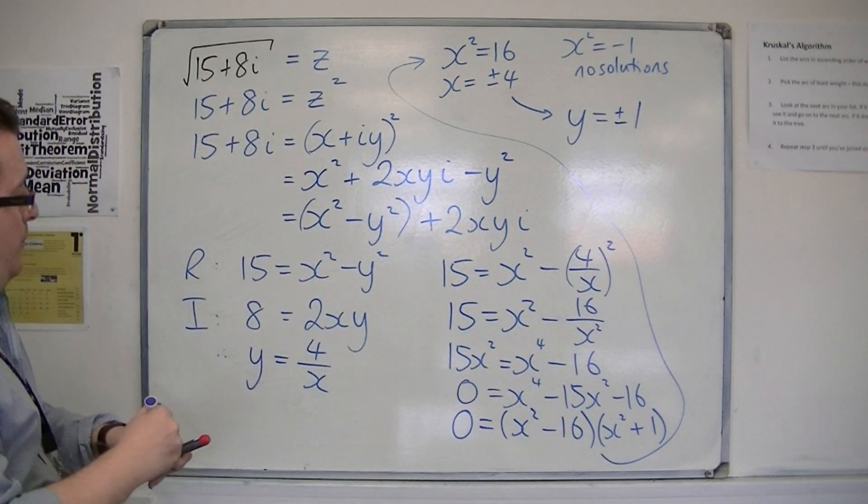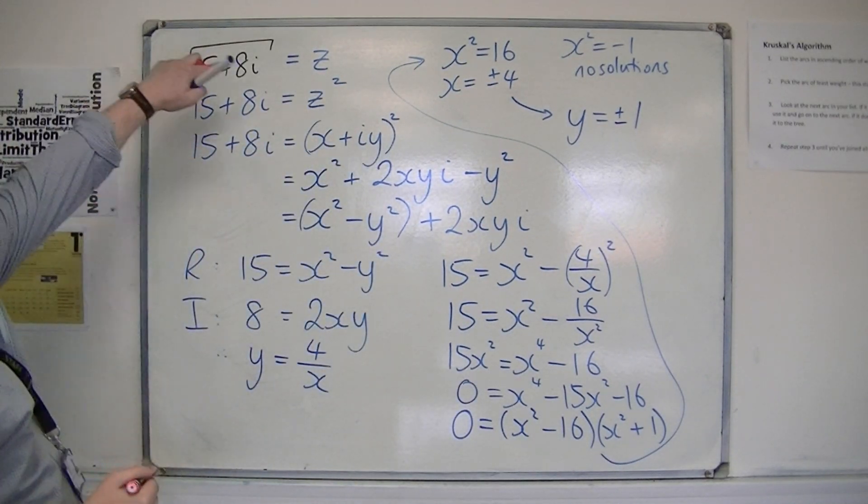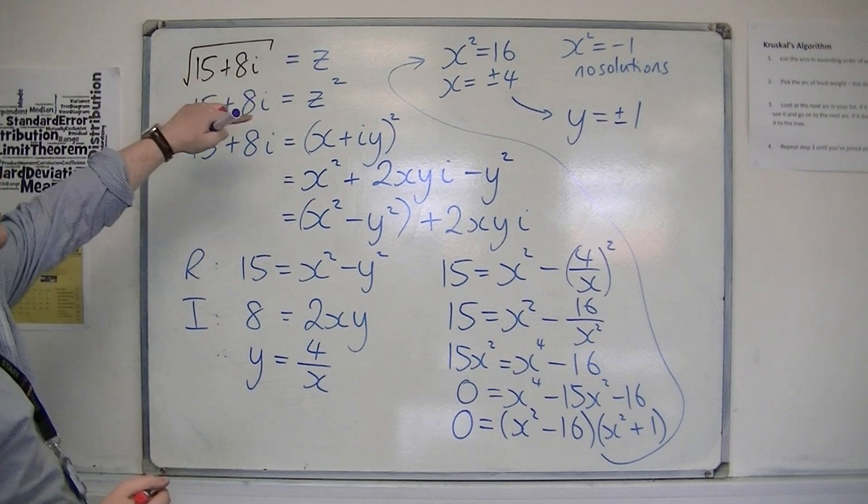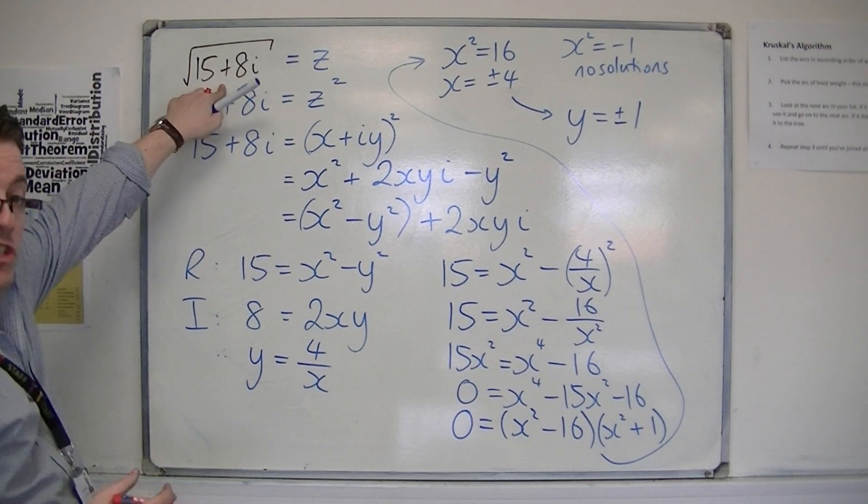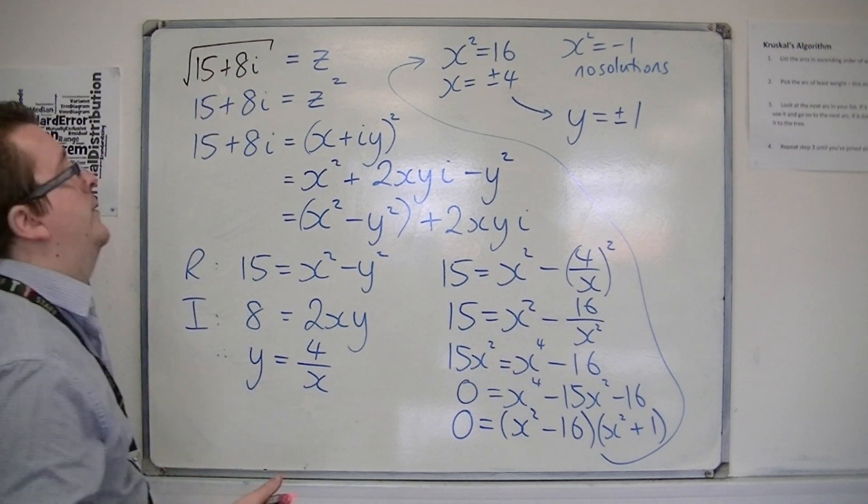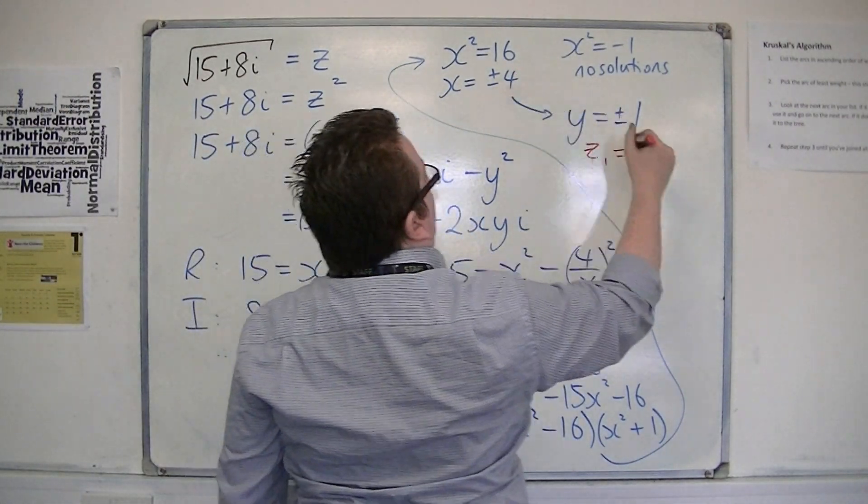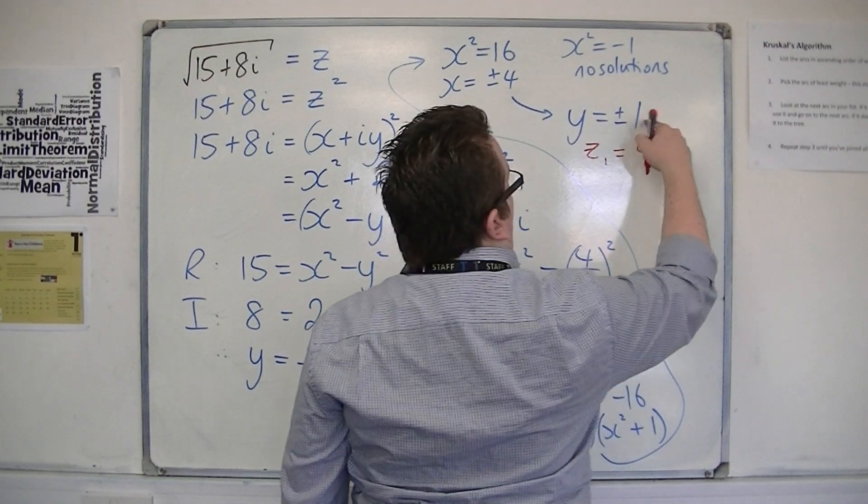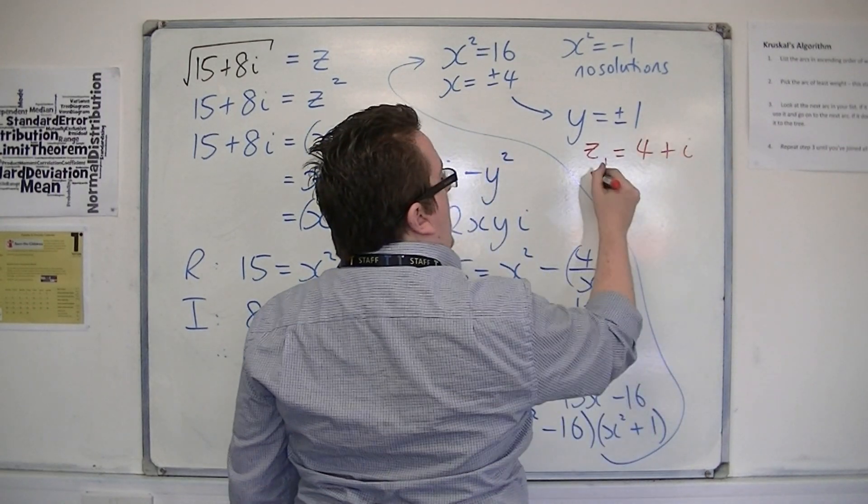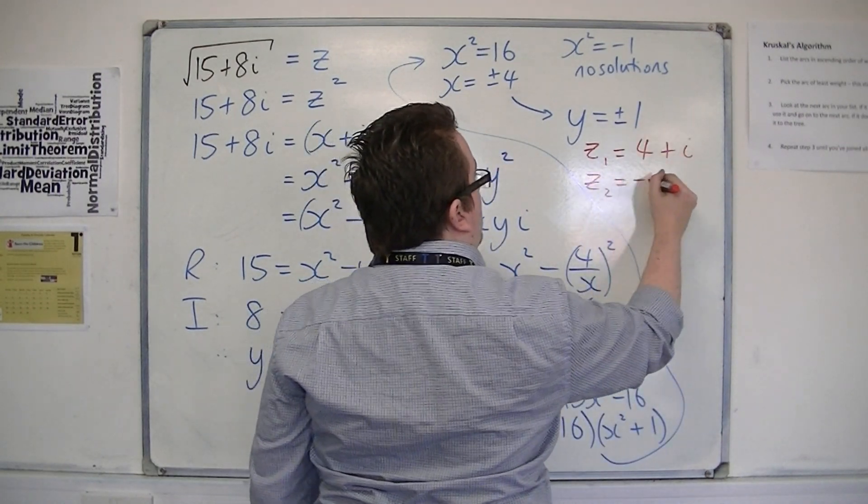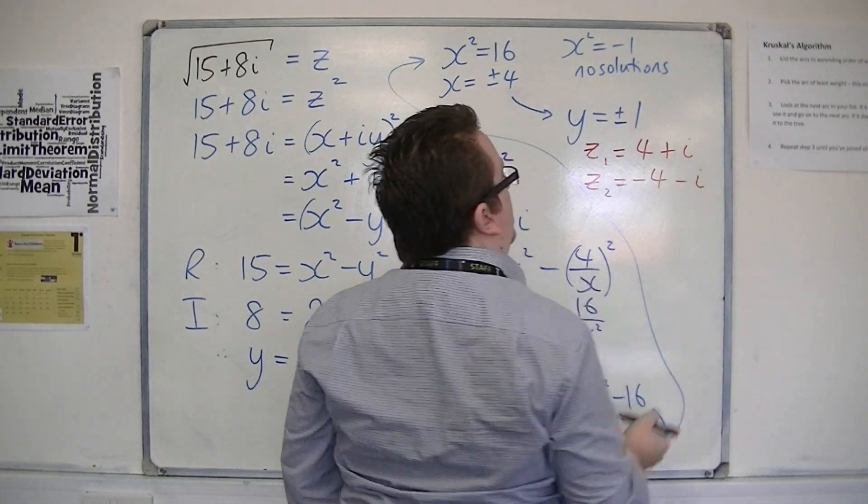So that must mean that the square root of 15 plus 8i actually has two solutions. There's the first solution, where we've got 4 plus i, and we've got a second solution, minus 4 minus i.